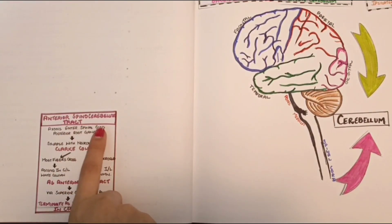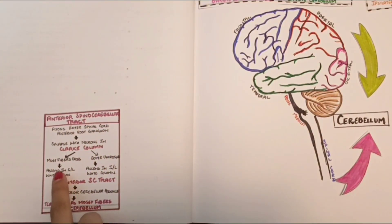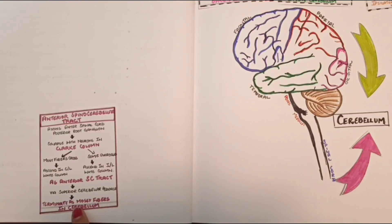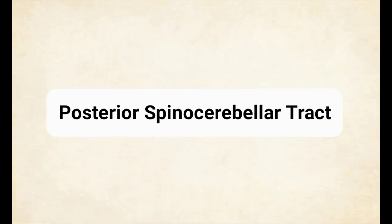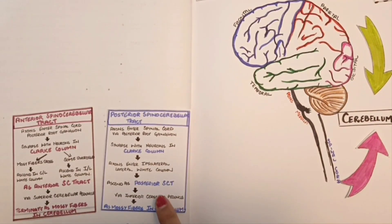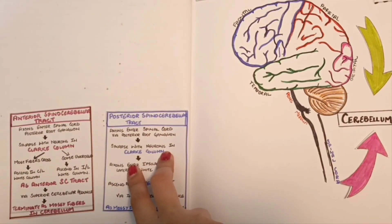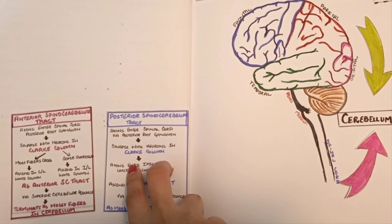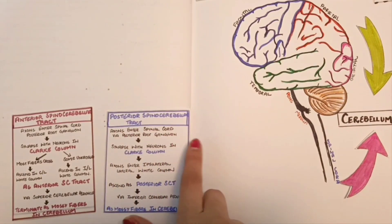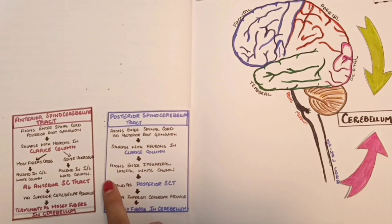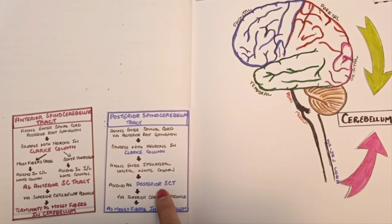Those fibers of the anterior spinocerebellar tract which had crossed in the spinal cord cross back when they reach the cerebellum. The second tract, very similar to the first, is the posterior spinocerebellar tract. It is also responsible for conveying information from muscles and joints to the cerebellum. The fibers enter the spinal cord via the posterior root ganglion, synapse with neurons in the nucleus thoracis, enter the ipsilateral lateral white column of the spinal cord, and ascend as the posterior spinocerebellar tract. They enter the cerebellum via the inferior cerebellar peduncle and terminate as mossy fibers in the cerebellar cortex.